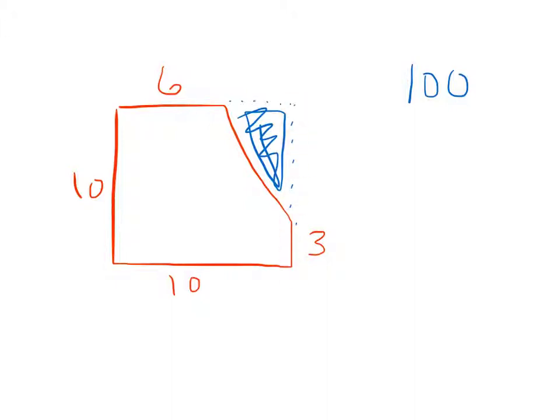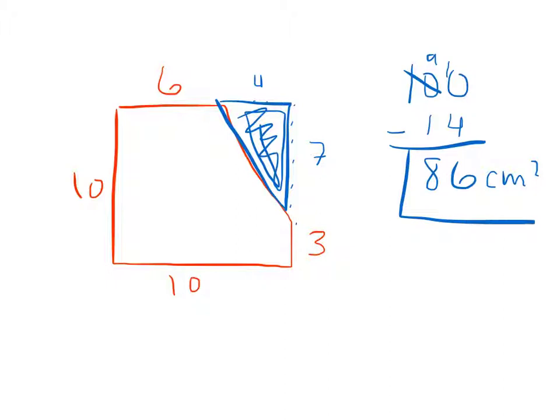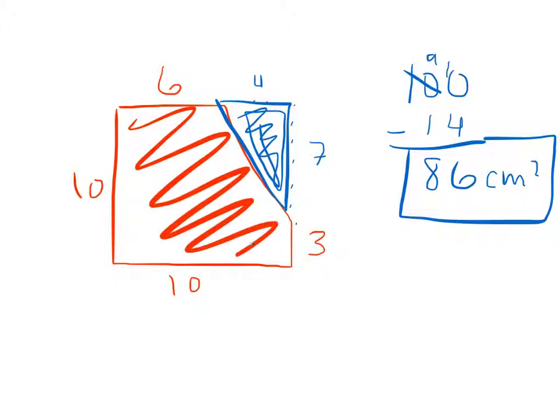And if I know the length of this side is 10, if this is 3, then this will be 7. And if the length of this side is 10, this is 6. That means this is 4. So 7 times 4 for this triangle here is 28. And I've got to divide that by 2, which is 14. So I'm going to subtract the 14 from the 100. And let's go ahead and make this a 10. I'll make this a 9. 10 minus 4 is 6. 9 minus 1 is 8. So I have 86. And then dimensions here are in centimeters squared. So the red area in here would be a total of 86 centimeters squared.